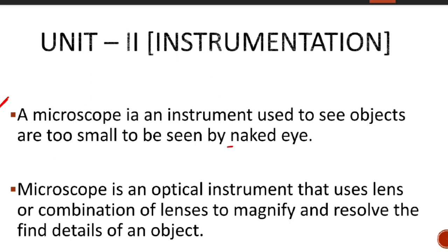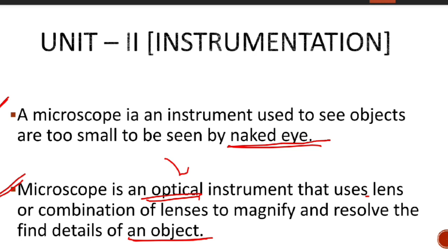Let's start Unit 2. What is the definition of a microscope? A microscope is an instrument used to see objects that are too small to be seen by the naked eye. It is also defined as an optical instrument that uses a lens or combination of lenses to magnify and resolve the details of an object.